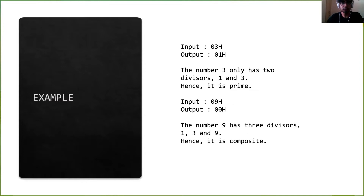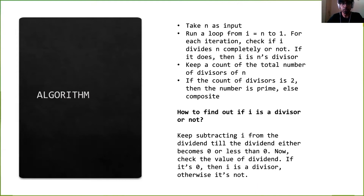Let's look at an example. If we have an input of 03h, which is obviously a prime number as it has only two divisors — 1 and 3 — the output of our program should be 01h stored in the memory location. For a composite number like 9, which has three divisors — 1, 3, and 9 — the output of the program should give us 00h.